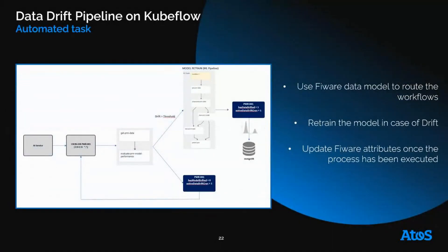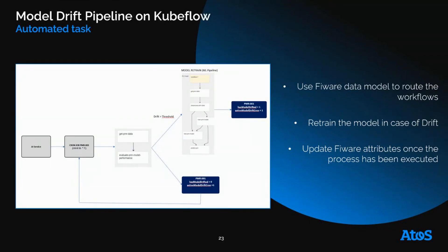This is how the data drift pipeline looks on Kubeflow — an automated cron job task executing a workflow with two components: get data and evaluate model performance. If no drift is detected, we update FIWARE attributes such as has model drifted and active data drift, so the AI service takes those new elements into account. If the drift exceeds the threshold, we retrain the model using the ML pipeline, update the FIWARE attributes accordingly, and save the figure into MongoDB. The model drift pipeline is quite similar — also automated, with the same two components and the same logic — except we update different FIWARE attributes because we are dealing with the model, not the data.